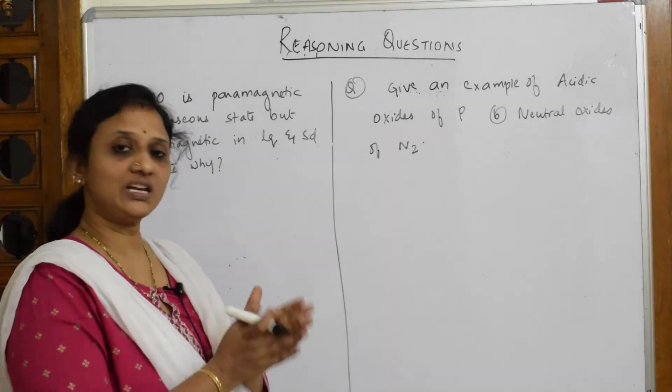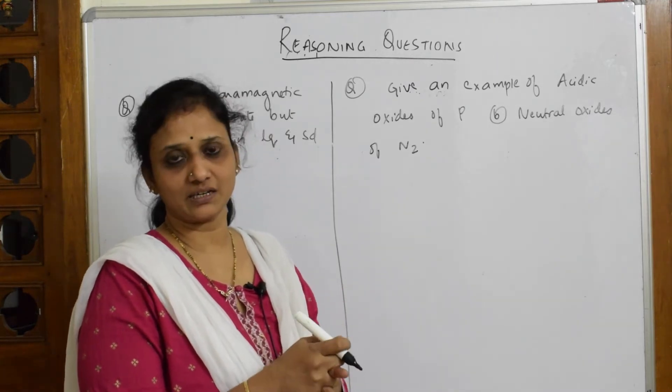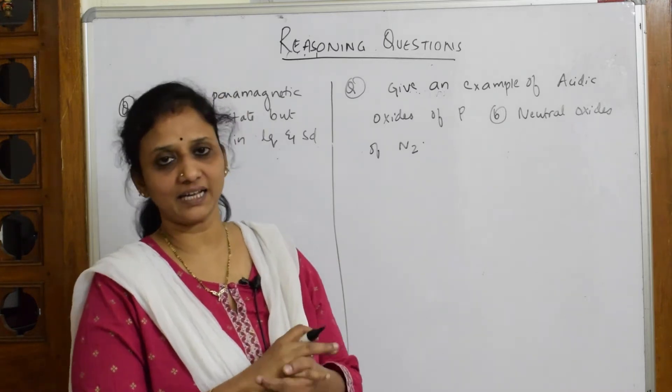We know paramagnetic means whenever it has unpaired electrons or odd electrons, we call them paramagnetic in nature. Whenever they are paired or when you get an even number, we call it diamagnetic.